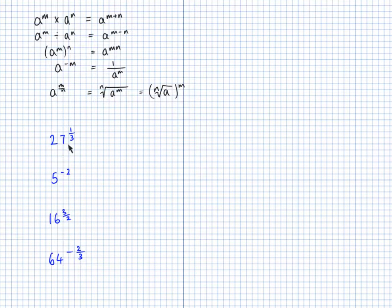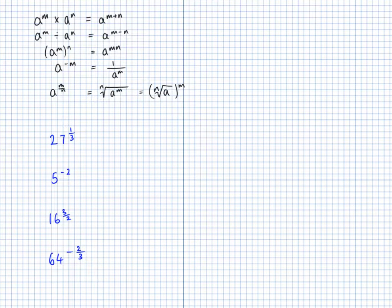Now, 27 to the power of a third. This last rule here tells me that the denominator is what I need to root it by. So the denominator is 3, so I need to cube root 27. This is going to be equal to the cube root of 27, which is 3.